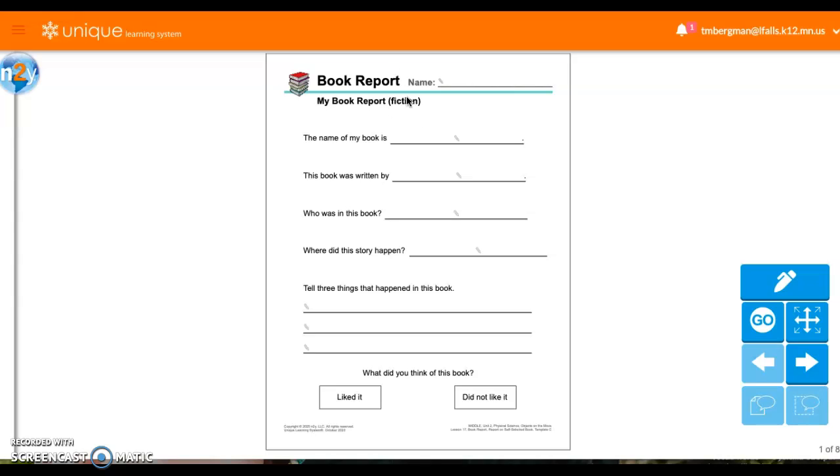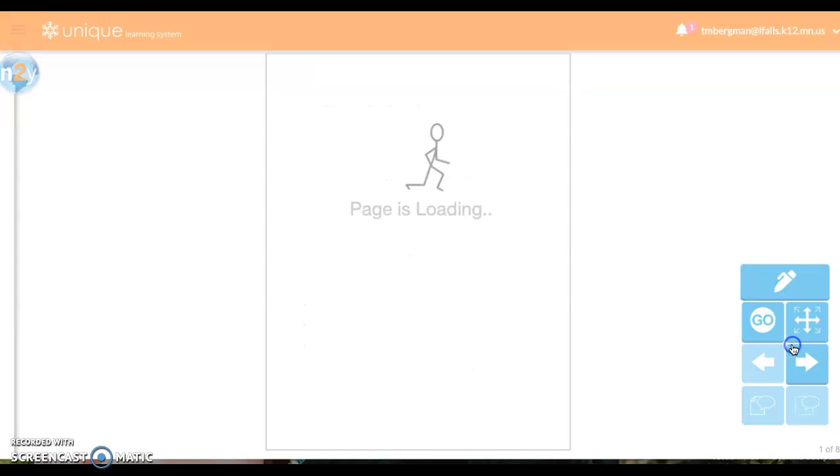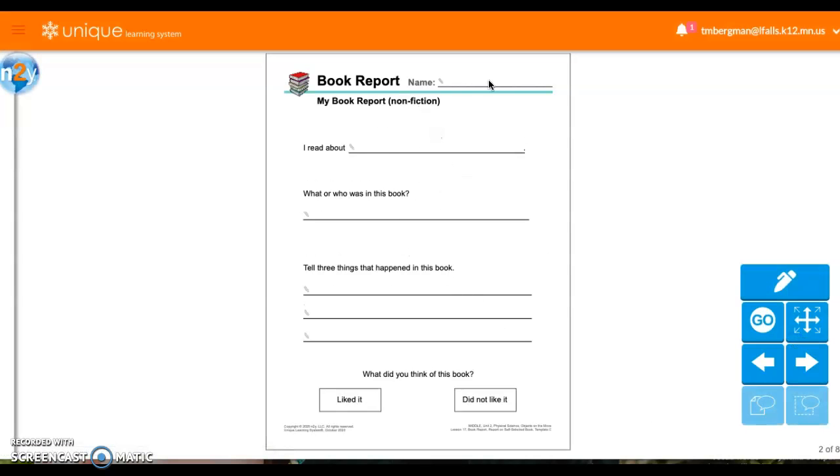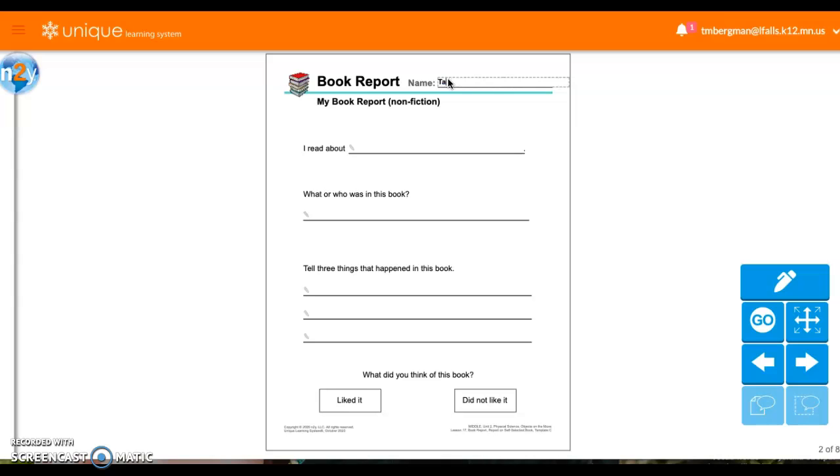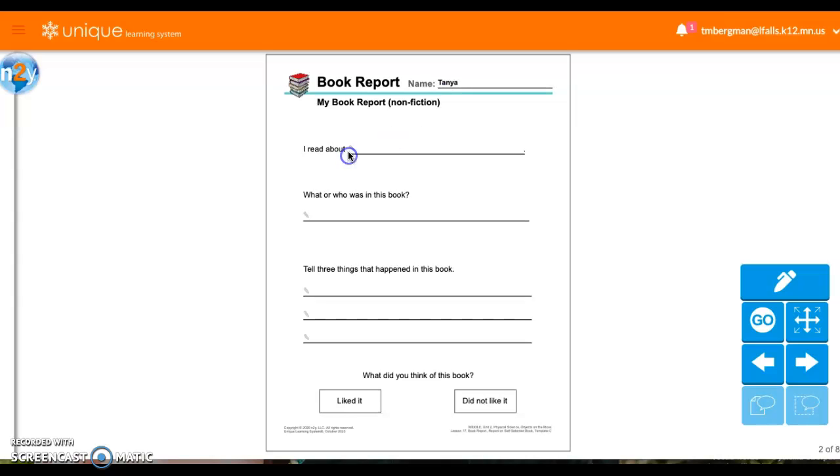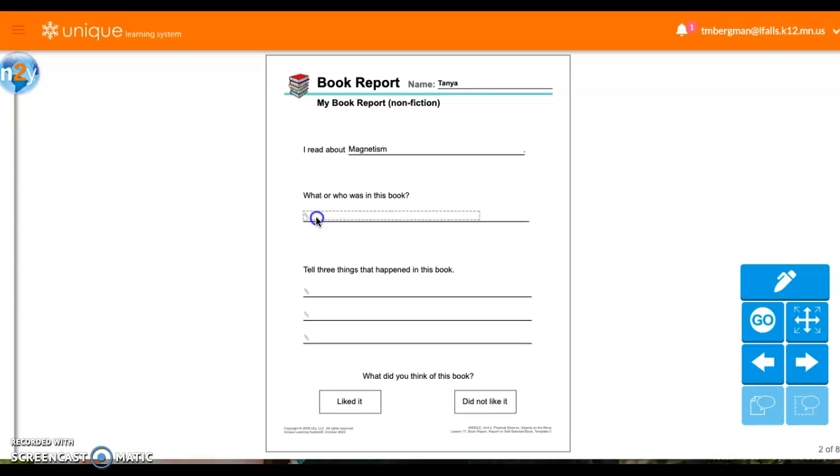Yeah, it's real. So this says fiction. I'm going to go ahead and skip to my next one here. And this one says nonfiction. So I'm going to put my name up at the top and start right here. So I read about, what did we learn, what did we read about? Magnetism, right? So I read about magnetism. Who or what was in this book? I'm going to say magnets, because magnets were in this story. There were a lot of other things in this story, like refrigerators and cranes and things like that. But really, the main component, the main idea of this book was about magnets.